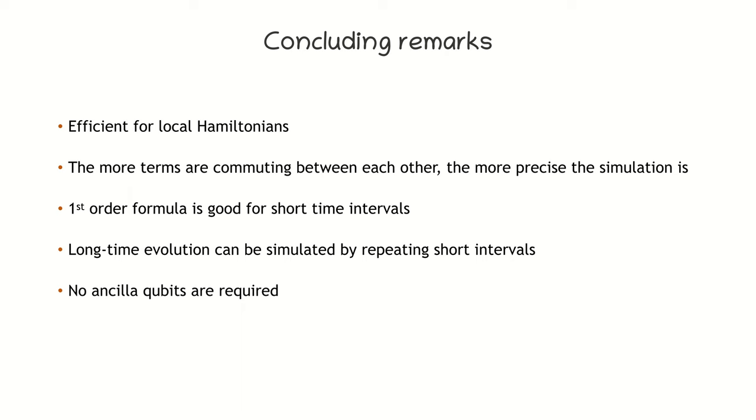So, what's important to remember about trotterization? It's efficient for Hamiltonians which can be presented as a sum of local terms. The more terms are commuting between each other, the more precise the simulation is. First-order Trotter formula is good for short time intervals, and if you want to simulate long-time evolution, you will have to adjust the number of trotter steps. A quantum simulation algorithm using product formulas does not require ancilla qubits, making this approach advantageous for near-term experimental demonstrations.